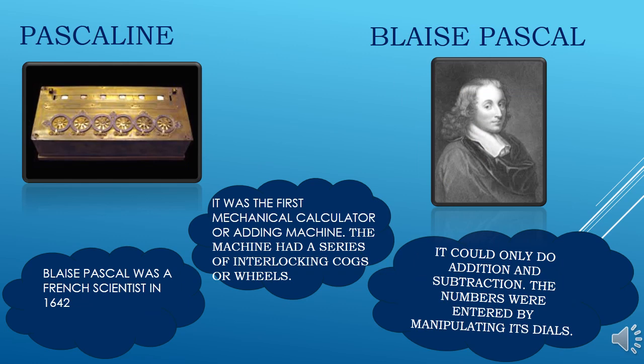Next, we have the Pascaline. The Pascaline was the first mechanical calculator or adding machine. The machine had a series of interlocking cogs or wheels. It could only do addition and subtraction. The numbers were entered by manipulating its dials. Blaise Pascal was a French scientist who designed this in the year 1642.